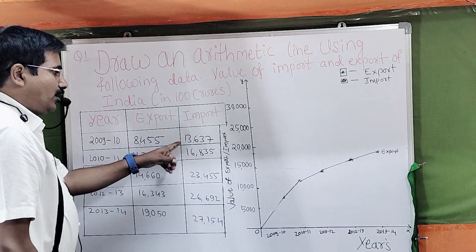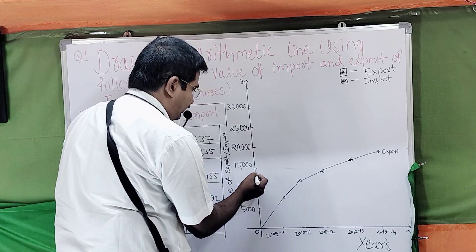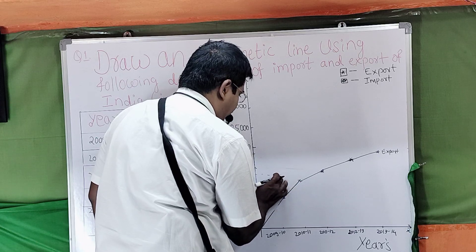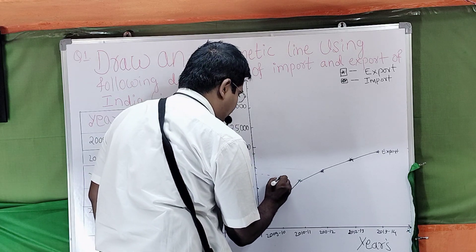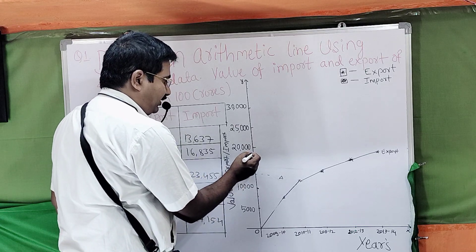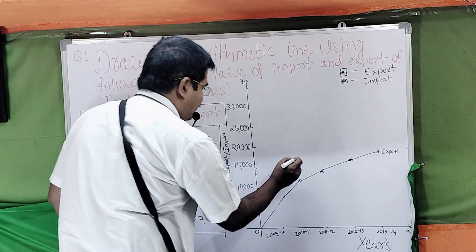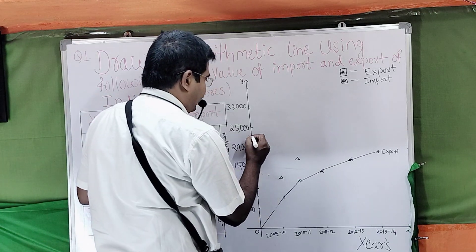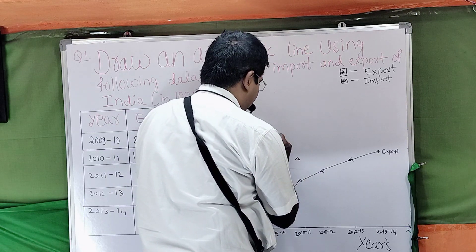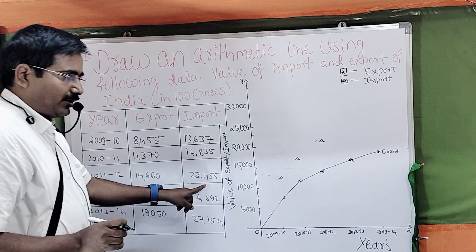Same thing for import also. 2009: import is 13,637 — so 13 means nearest — delta is taken there. Then 16,835 — 16 means nearest to 17.5 — another delta. Next 23,000 dear students — 20 means center point at 2.5 — nearest — delta taken there. Then 23,455. Then 26, dear students — 25 is there — in between 25.5 — so nearest 25.